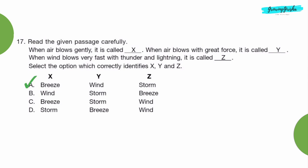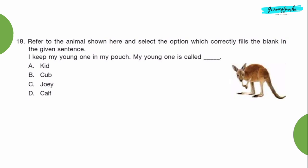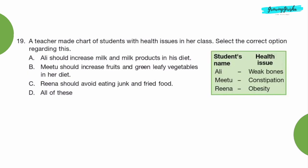Question 18: Refer to the animal shown here and select the option which correctly fills the blank in the given sentence. I keep my young one in my pouch. My young one is called dash. Option C, Joey. Question 19: A teacher made chart of students with health issues in her class. Select the correct option regarding this.